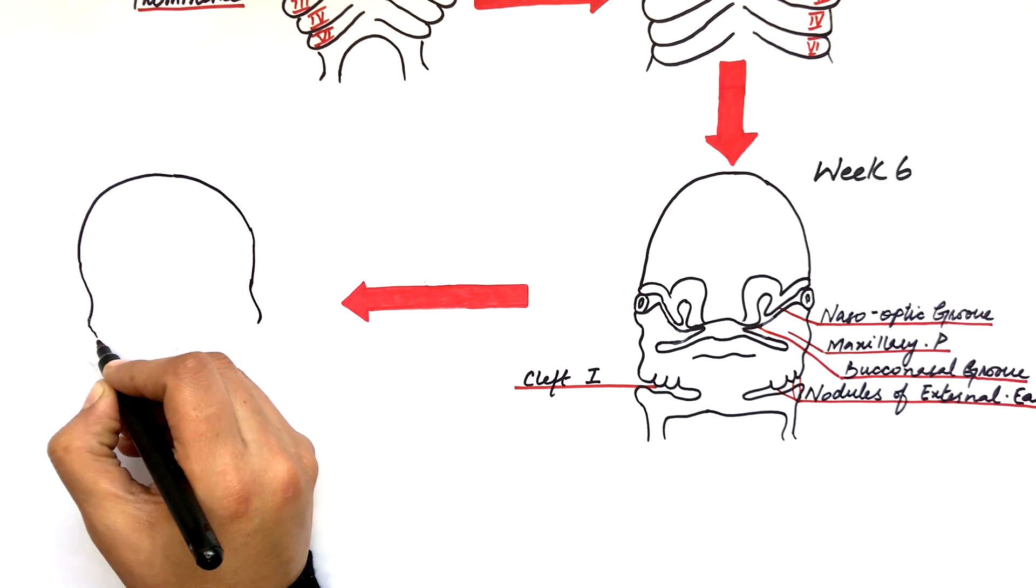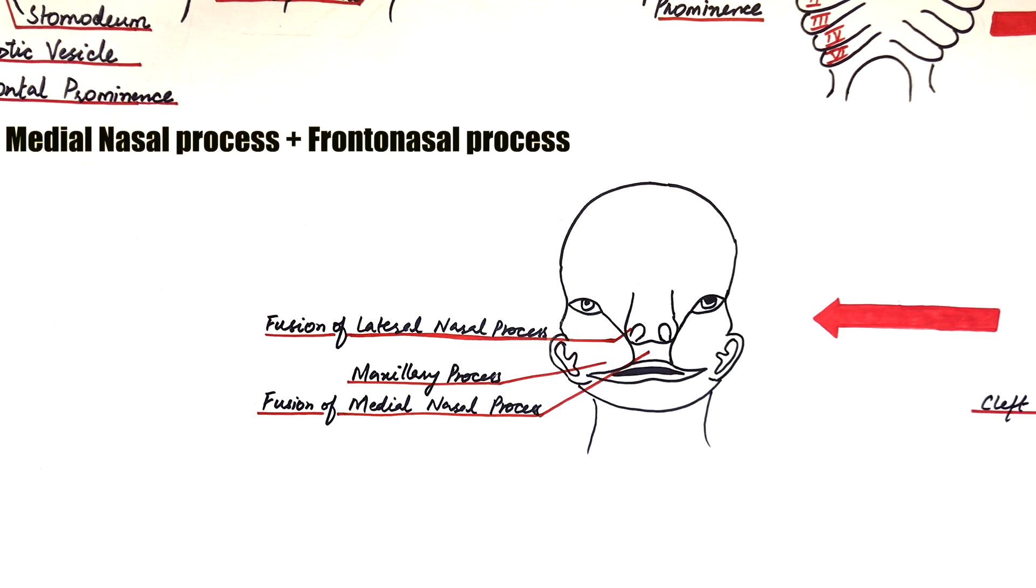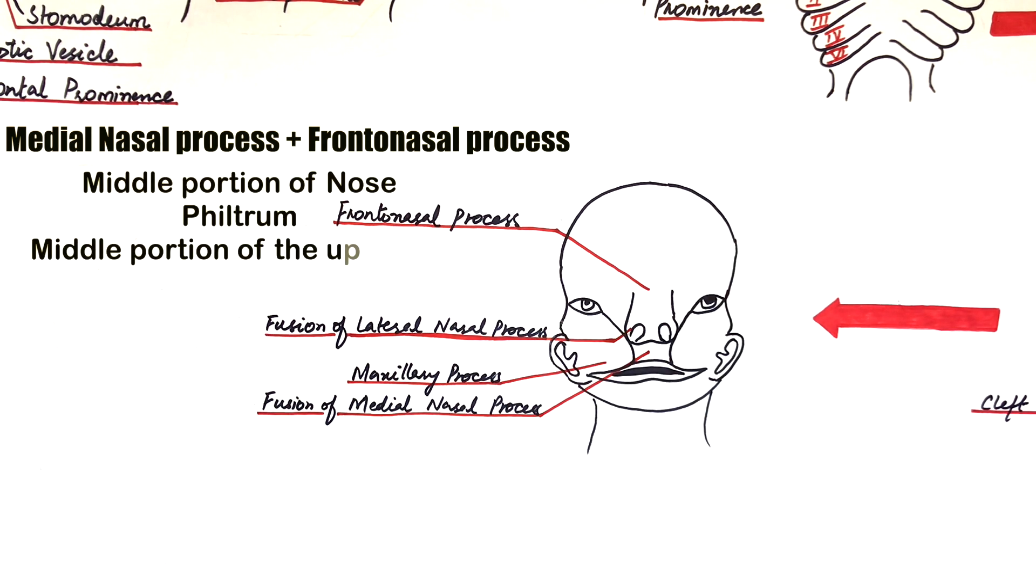At weeks 7 to 8, the lateral nasal processes fuse with the maxillary processes to form the lateral sides of the nose and the lips. And the fusion between the medial nasal processes along with the frontonasal process causes the formation of the middle portion of the nose.